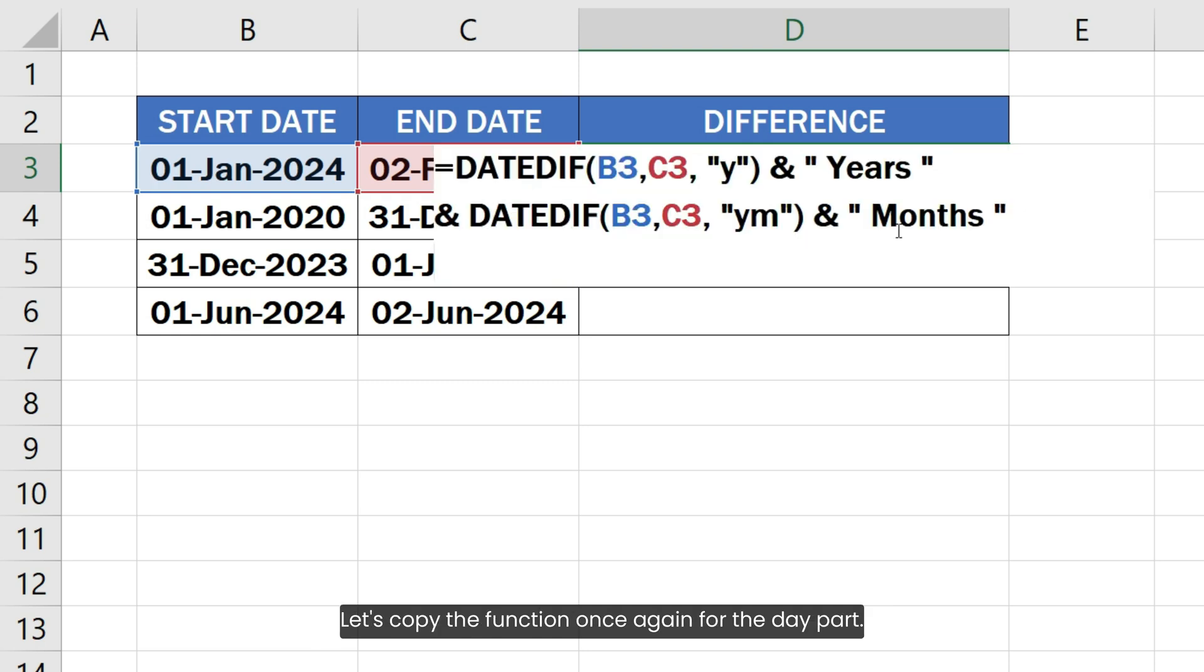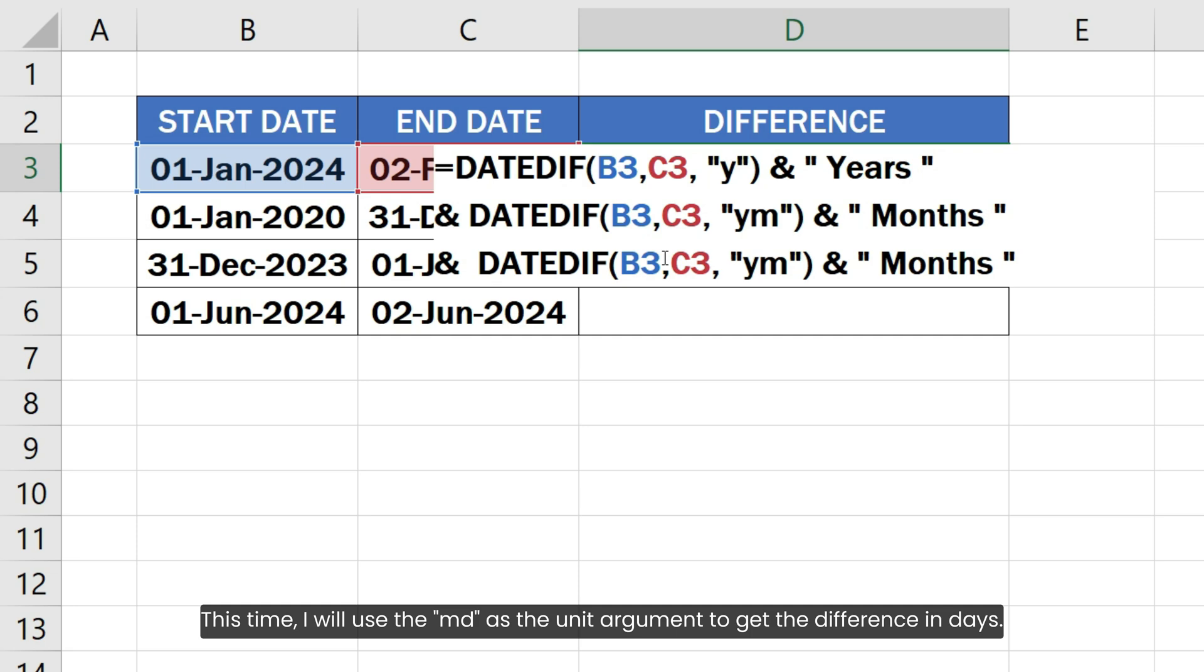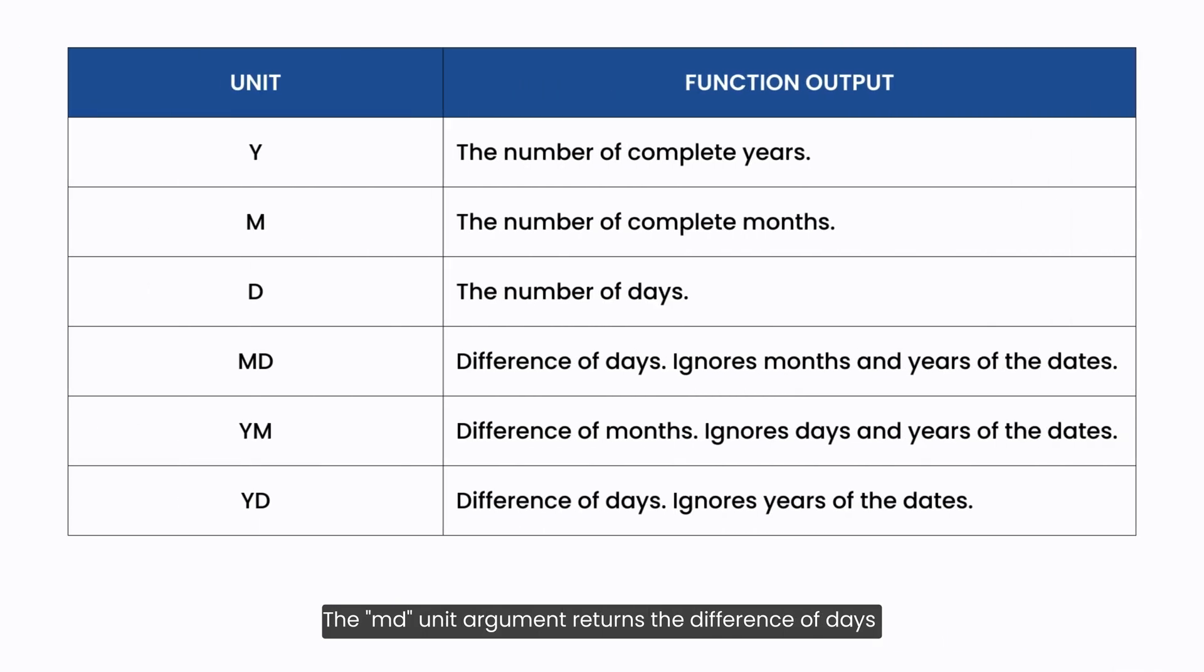Let's copy the function once again for the day part. This time I will use md as the unit argument to get the difference in days. The md unit argument returns the difference of days between two dates by ignoring years and months.